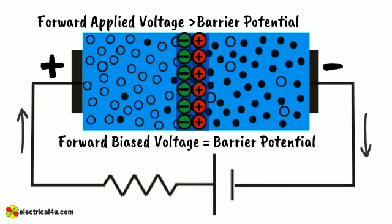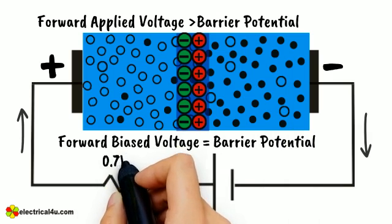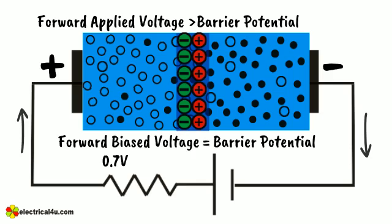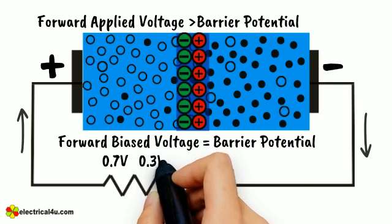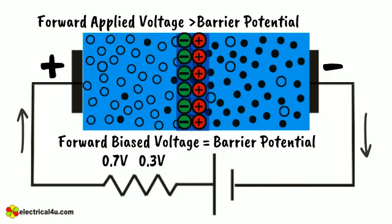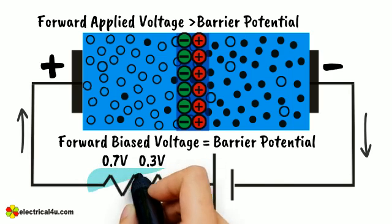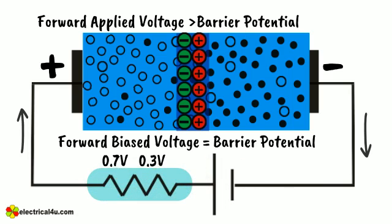For silicon diode, it is 0.7 volts. For germanium diode, it is 0.3 volts. When forward applied voltage is more than this forward biased voltage, there will be forward current in the diode and the diode will become short circuited. Hence, there will be no more voltage drop across the diode beyond this forward biased voltage and forward current is only limited by the external resistance connected in series with the diode.